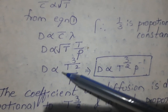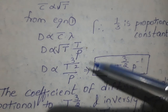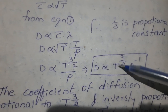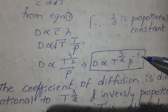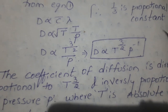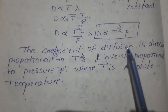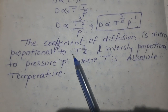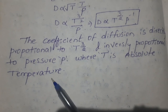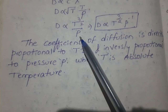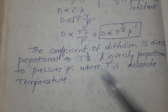Therefore D is directly proportional to T power 3 by 2 divided by P. The coefficient of diffusion is directly proportional to T to the power 3 by 2 and inversely proportional to pressure P, where T is the absolute temperature.